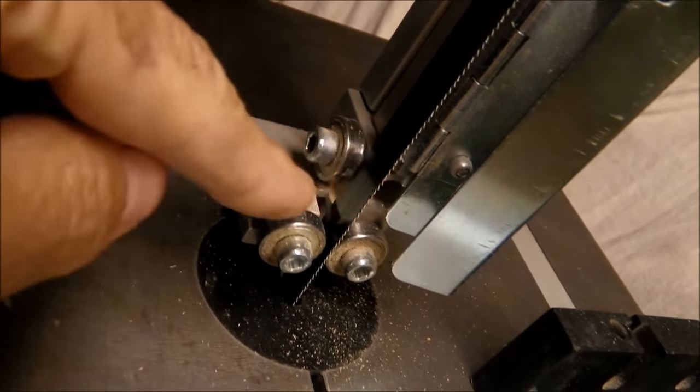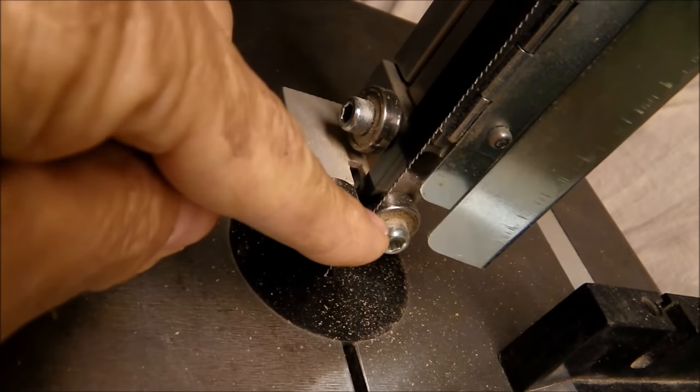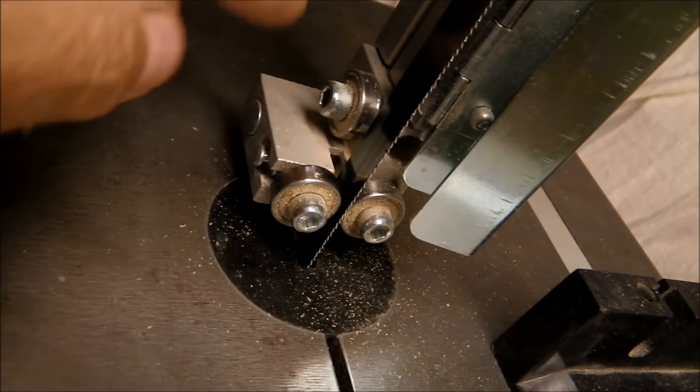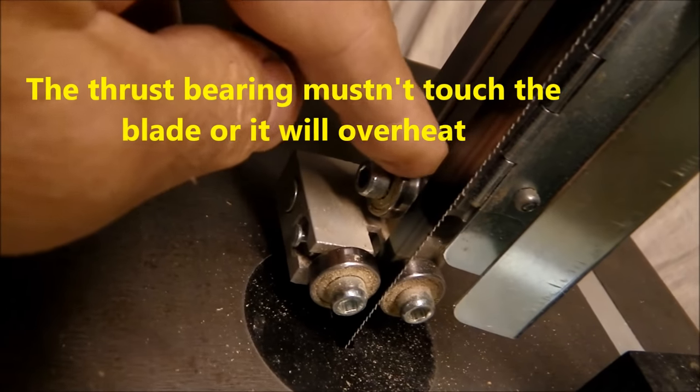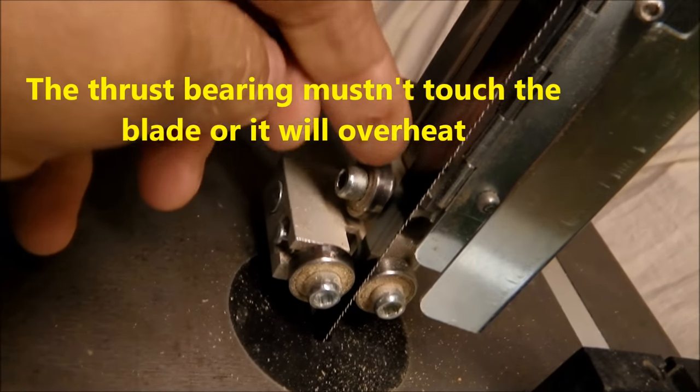The teeth on the blade need to be in front of the guard bearings and the thrust bearing needs to be away from the bearing by a couple of mil.